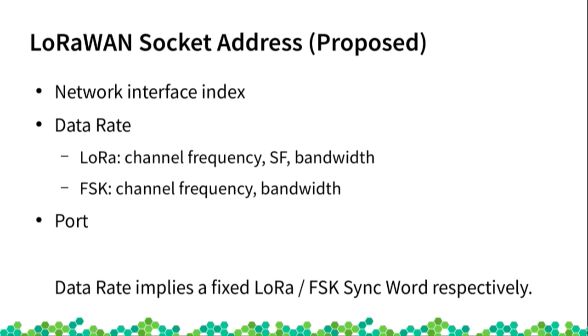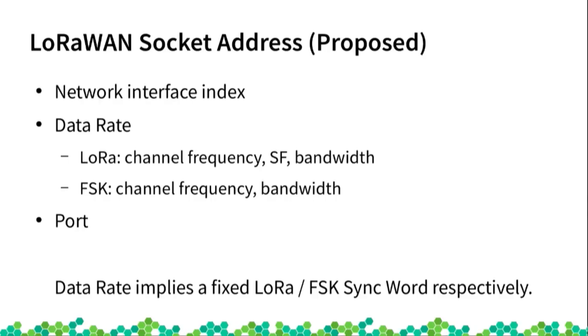For the LoRa mode, a data rate describes the frequency, spreading factor, and bandwidth — defined as a particular data rate, something like 0 to 15. Some data rates use the FSK mode and also have a frequency and bandwidth associated, while spreading factor is specific to LoRa. Similar to TCP/IP there is also the concept of different ports.